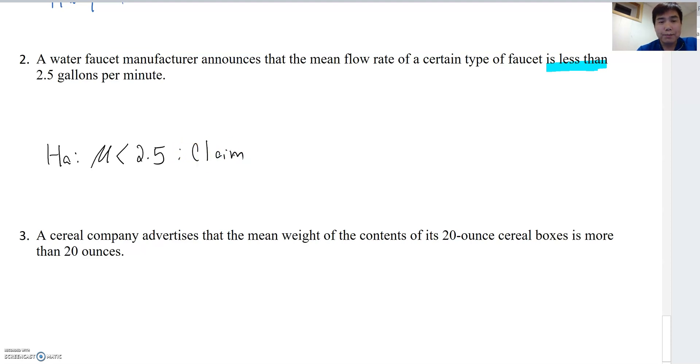Then what's H₀? Yes, H₀ is opposite direction but includes equal sign. If alternative is less than, then null hypothesis must be greater than or equal to 2.5.